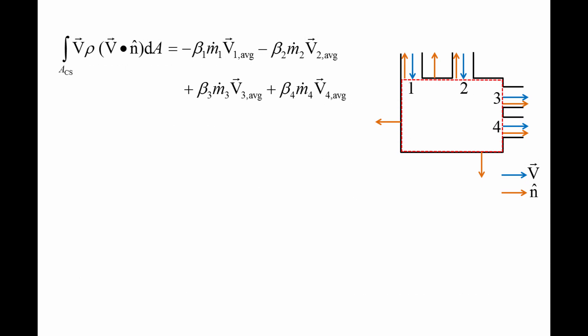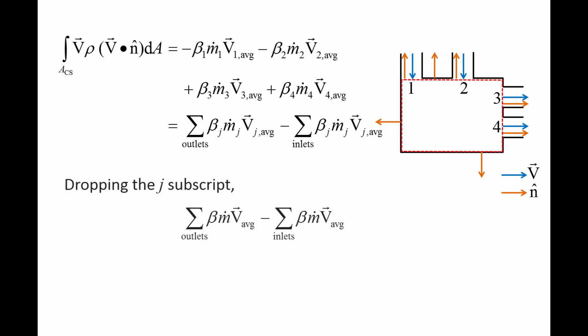Returning to the generic device, we replace the inlet and outlet integrals with beta times m-dot times the average velocity vector. Notice that a negative sign appears in front of the inlet terms, and a positive sign appears in front of the outlet terms. We can express this equation more compactly by rewriting it as the sum of beta times m-dot times v_average at the outlets minus the sum of beta times m-dot times v_average at the inlets, which equals the sum of external forces on the control volume.